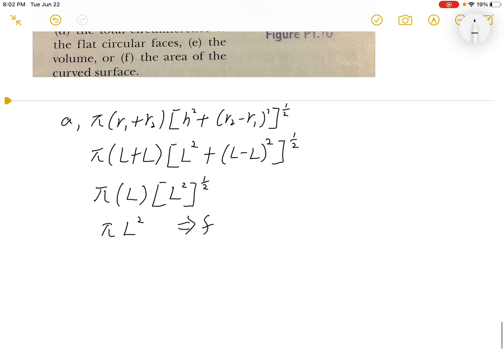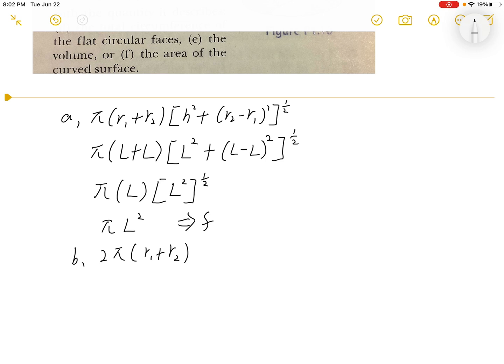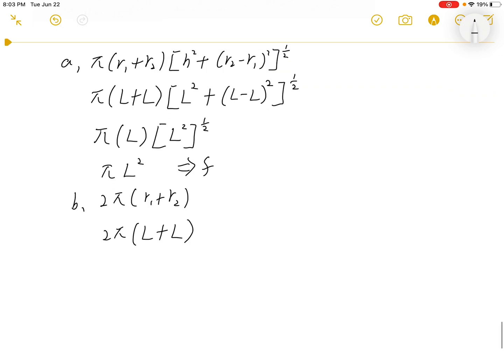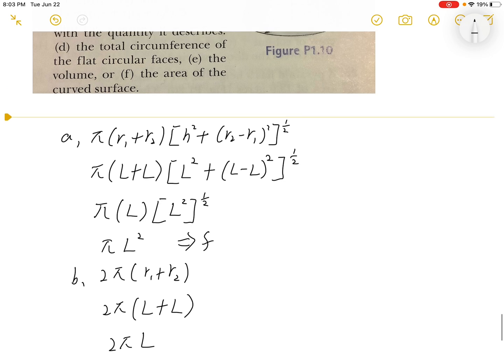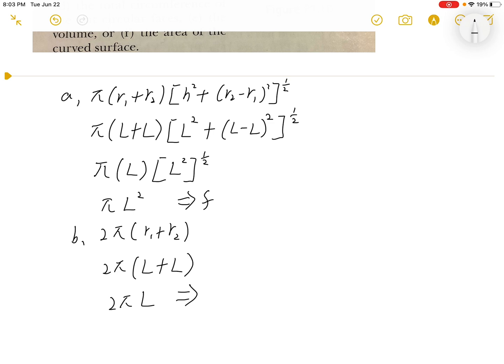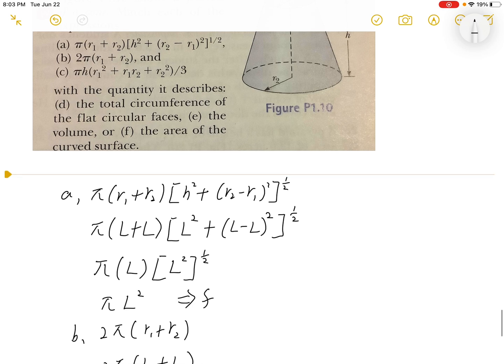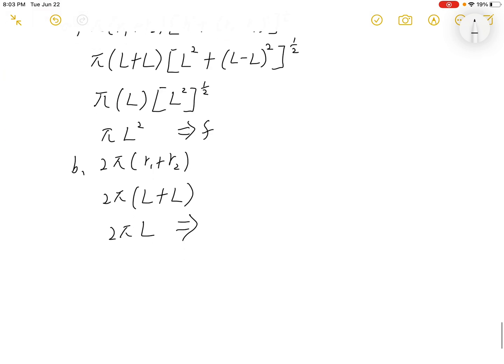Now let's do part B. Part B is 2π(r₁ + r₂). Converting this to dimensions, we get 2π(L + L), which simplifies to 2πL, giving us a circumference. This describes the total circumference of the flat circular faces, so it's answer D.